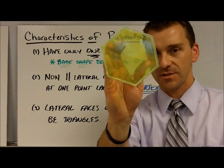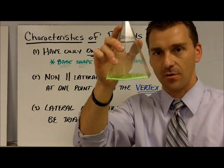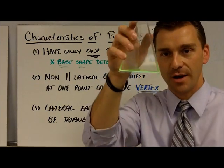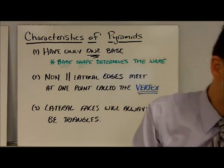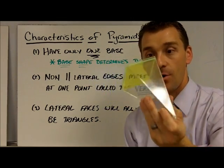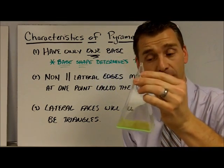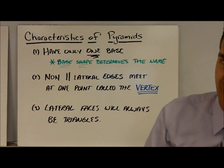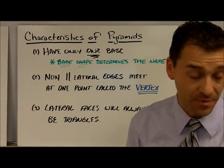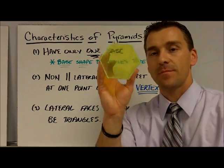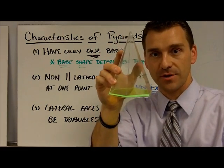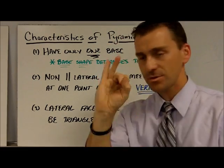So this guy right here, the base is a hexagon. That is a hexagonal pyramid. The base shape right here is a triangle. That is a triangular pyramid. The base shape right here is a square. That is a square pyramid, or a rectangular pyramid, depending on what you're talking about. And the base can be any shape it wants to be. The name of the shape base is the name of the actual pyramid itself.